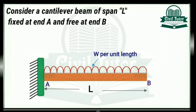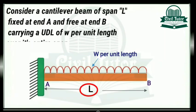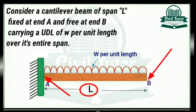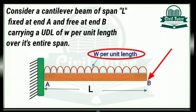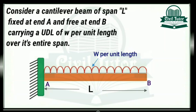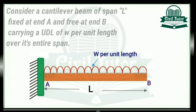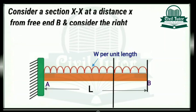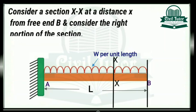Consider a cantilever beam of span L, fixed at end A and free at end B, carrying a UDL of W per unit length over its entire span. Now let's consider a section XX at a distance of X from the free end B, and consider the right portion of this section.